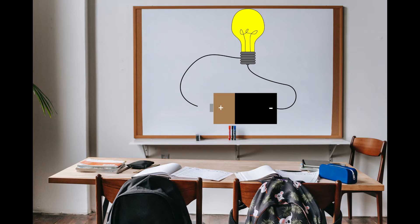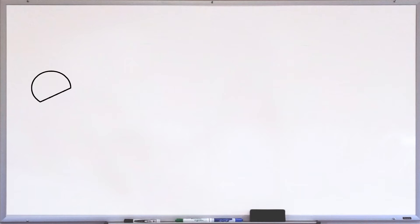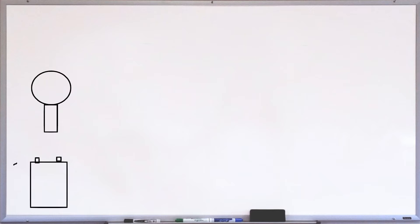To make an electrical circuit, we need a battery, two wires, and a lamp. We connect the plus and minus of the battery with the lamp, and the lamp is on.